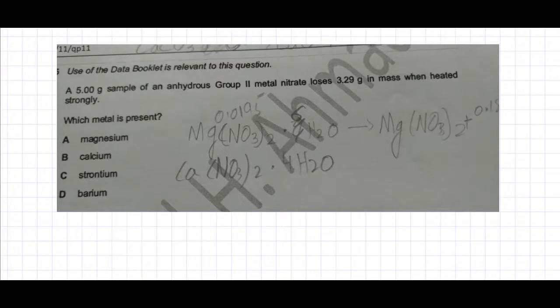In this video I'm going to answer this stoichiometry question. The question states there's a 5 gram sample of an anhydrous Group 2 nitrate, so it's without water. When that Group 2 metal nitrate decomposes, it loses 3.29 grams in mass when heated strongly.